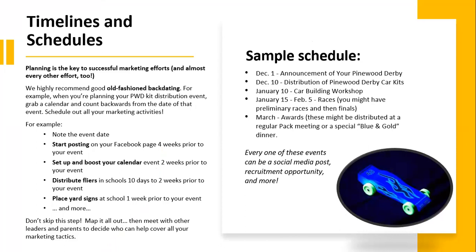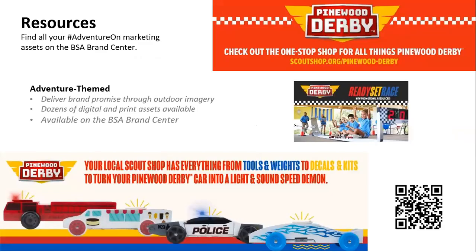Timelines and schedules are important. You want to schedule out your social media calendar quite a few weeks ahead. For example, if December 1st is when you announce the Derby, December 10th you distribute the cars, and January 15th to February 5th you have the races — you want to backdate promoting those events. There is a membership backdater on the Daniel Webster Council membership and marketing hub under resources and downloads. All the BSA Brand Center resources apply here, and the Manchester Scout Shop has everything you need for the Pinewood Derby.